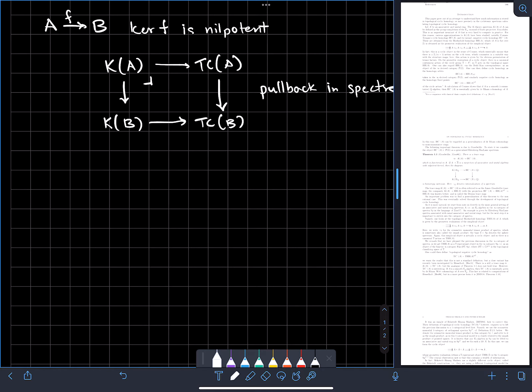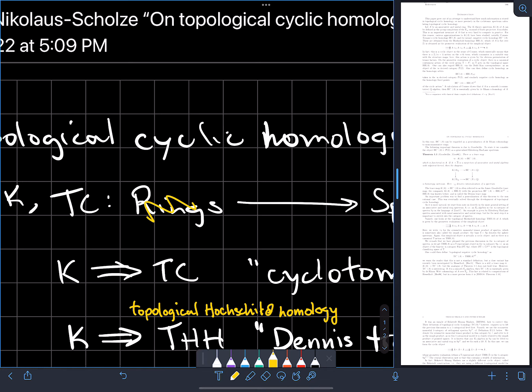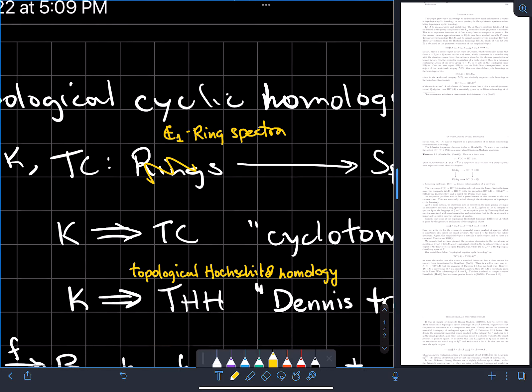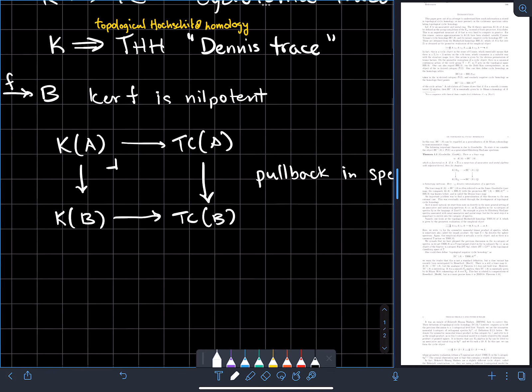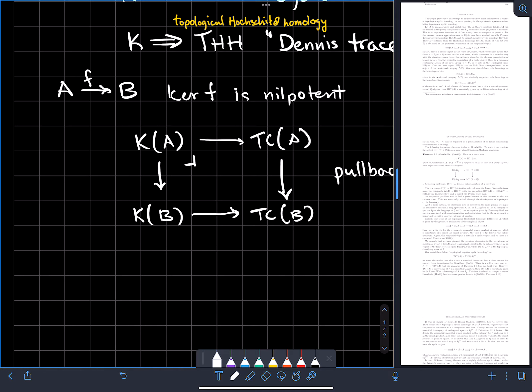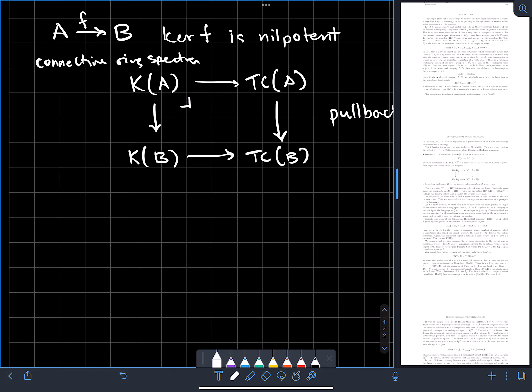More generally, we can replace the category of rings with the category of E1 ring spectra. In this case, the cyclotomic trace induces this pullback square whenever A and B are connective ring spectra. That is, if the homotopy groups of these ring spectra vanish in negative degrees.